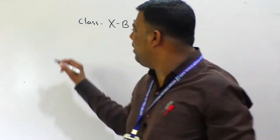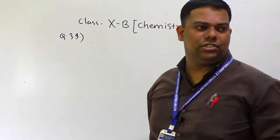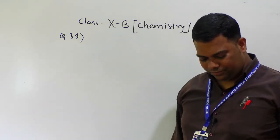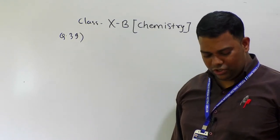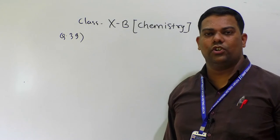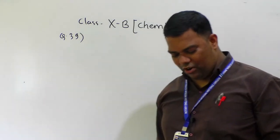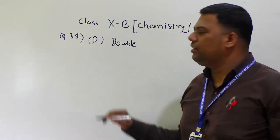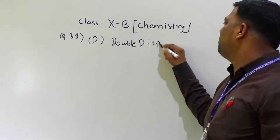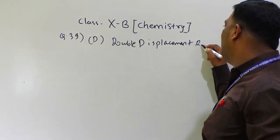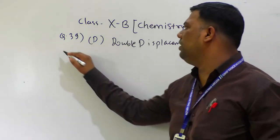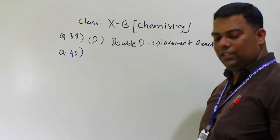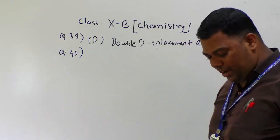Question number 39: the reaction in which exchange of ions between the reactants takes place is called what? We already done this. Option D — double displacement reaction. Exchange of ions between reactants is the double displacement reaction.